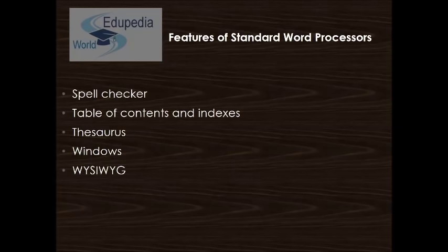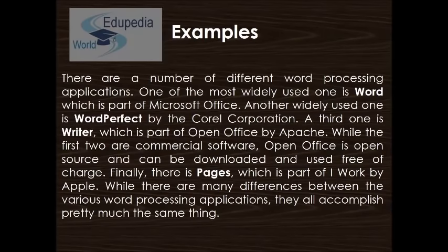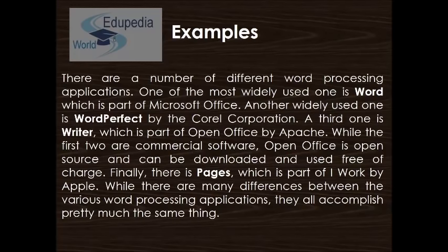Let's look at some examples of word processing software. One of the most widely used is Microsoft Word, which is part of the Microsoft Office Suite. Another widely used one is WordPerfect by the Corel Corporation. Then comes Writer, which is part of OpenOffice by Apache. While the first two are commercial software, OpenOffice is open source and can be downloaded and used free of charge. Finally, there is Pages, which is part of iWork by Apple. Although there are many differences between these applications, they all accomplish pretty much the same tasks.